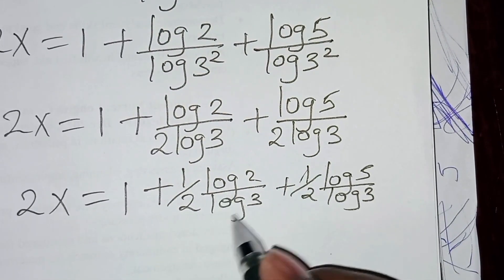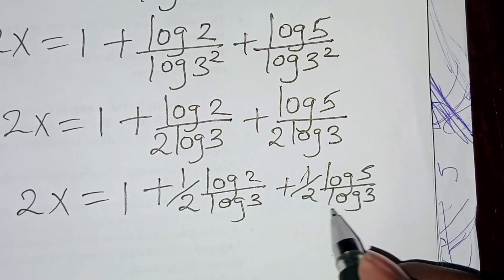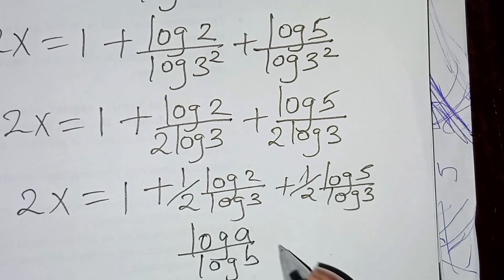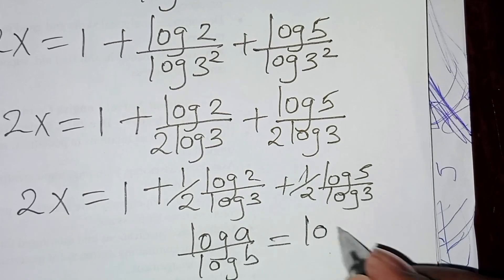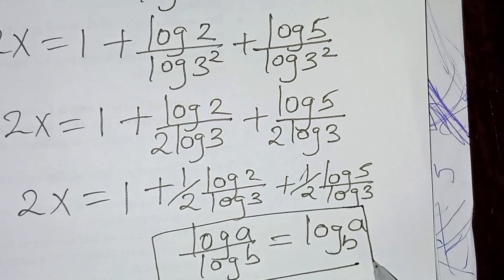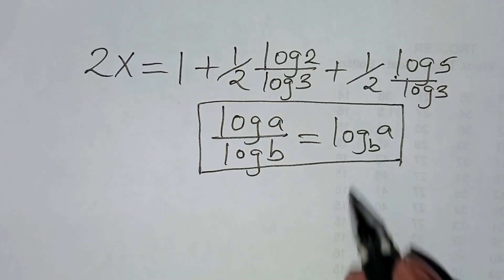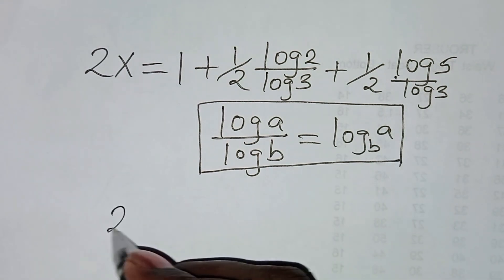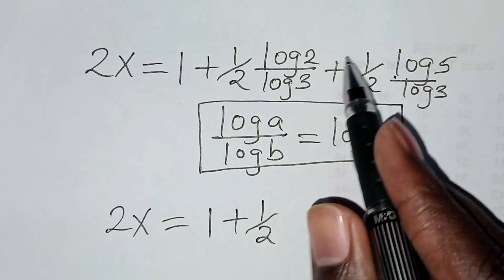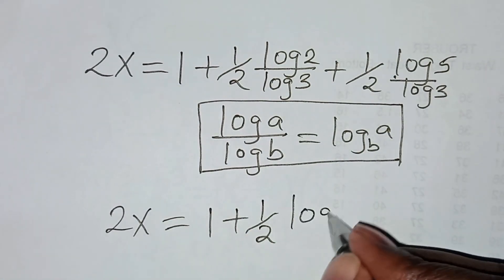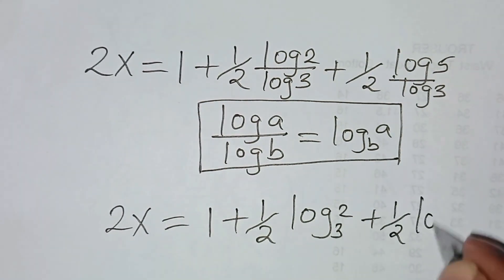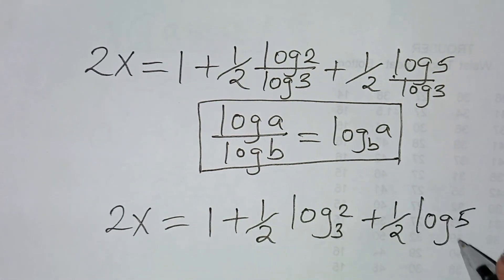Now, log 5 divided by log 3 is in the form of log A divided by log B, which we can express as log A to base B. Applying this change-of-base property, we have 2x is equal to 1 plus one-half times log₃2 plus one-half times log₃5.